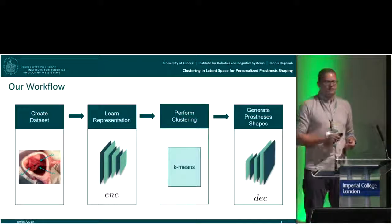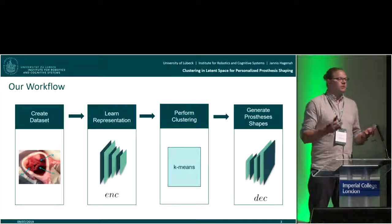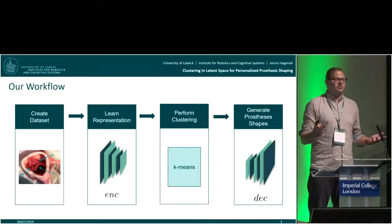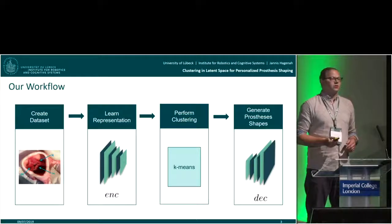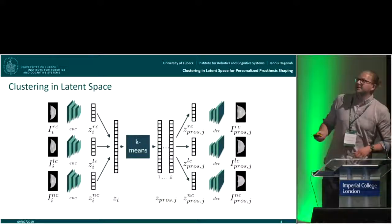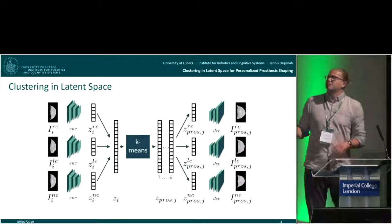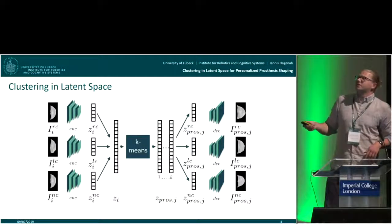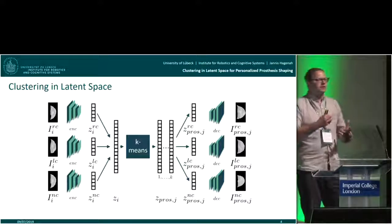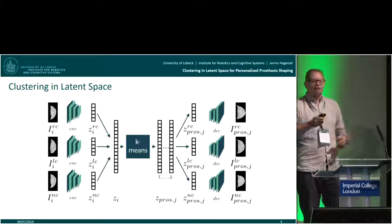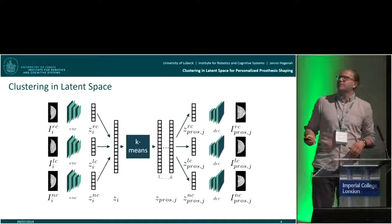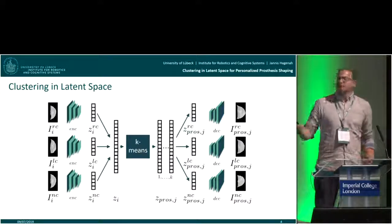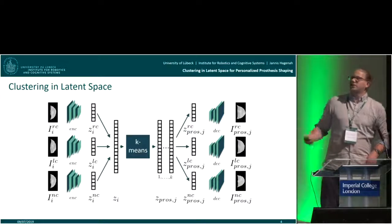From these cluster centers, the cool thing is that we can evaluate the prosthesis because we can generate images of this prosthesis shape using the decoder network. The whole pipeline looks like this — we encode all three leaflets that form one valve, concatenate this to have the valve representation, then cluster and generate the prosthesis.